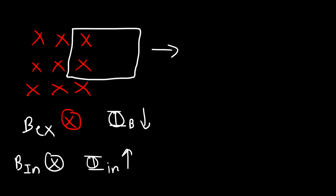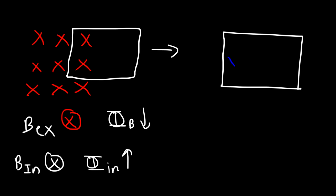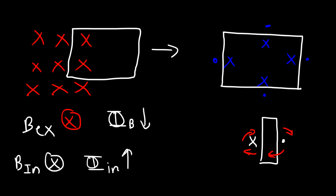The same direction means the induced field is going to be X (into the page) everywhere on the inside of this coil, and a dot (out of the page) on the outside. Focusing on one side: to the right we have a dot, and to the left we have an X. Using the right-hand rule, curling fingers in that direction, the current is going in that direction — and once again, the current is flowing clockwise.